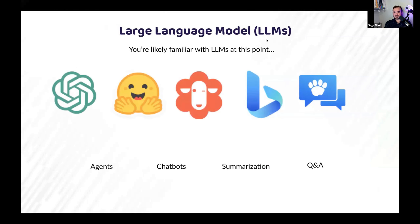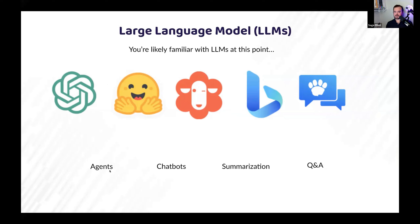Tying this back to large language models — you're likely familiar with plenty of LLMs at this point: OpenAI, Transformers from Hugging Face, Dolly from Databricks. And you've probably seen a lot of the applications like agents, chatbots, summarization, and QA. Let us know in the chat if you're working on any of these specific applications with LLMs, or what type of LLM you're using.